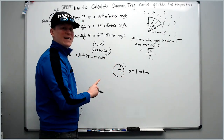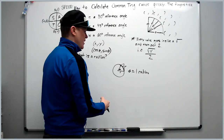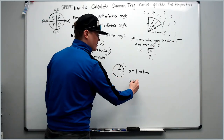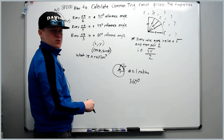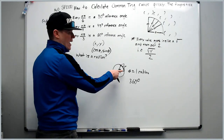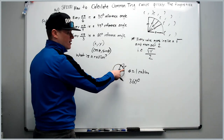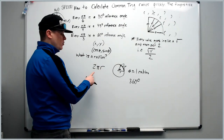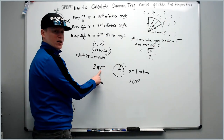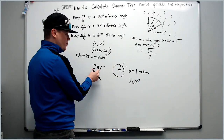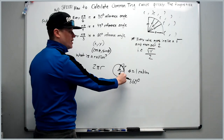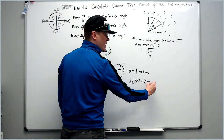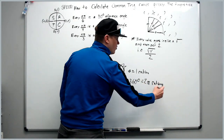Connect the end of that arc length to the center of the circle and the angle created is one radian. So a radian is a central angle that subtends an arc of one radius — hence the name. How many radians in a full circle? That's just how many radii fit around the outside: the circumference is 2πr, so the radius occurs 2π times, giving us 2π radians.